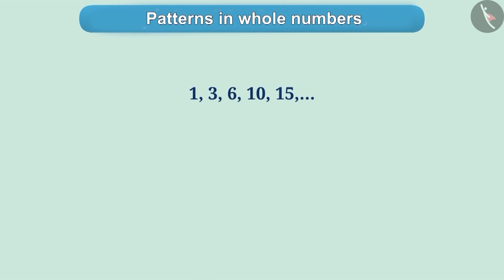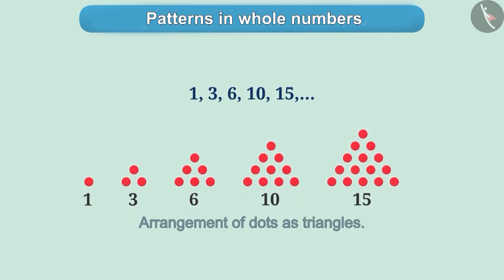For example, here is a pattern of whole numbers. It is an arrangement of dots as triangles. Number of dots which can be arranged as triangles are called triangular numbers.